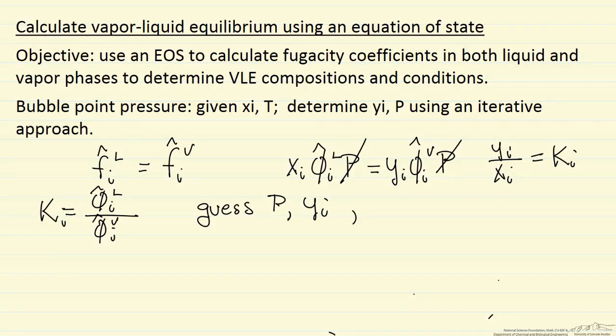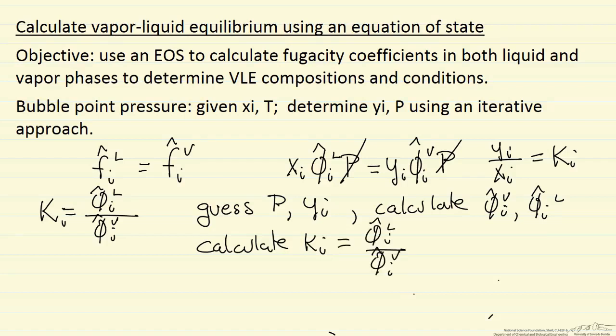We're going to make that guess. We're then going to calculate these fugacity coefficients, so both the vapor phase and the liquid phase values. The next step is to calculate each of the ki values.